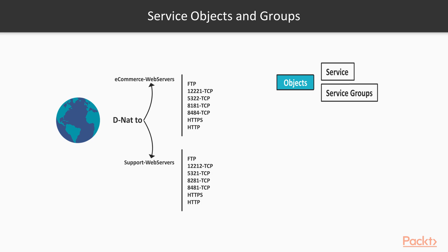As we discussed in the previous video, having a complex policy table can cause a lot of issues when it comes to troubleshooting because you don't know what you're looking at. This video is going to be focused on how we can shorten and simplify our policy table — make it precise and clean so troubleshooting in the future is easier.